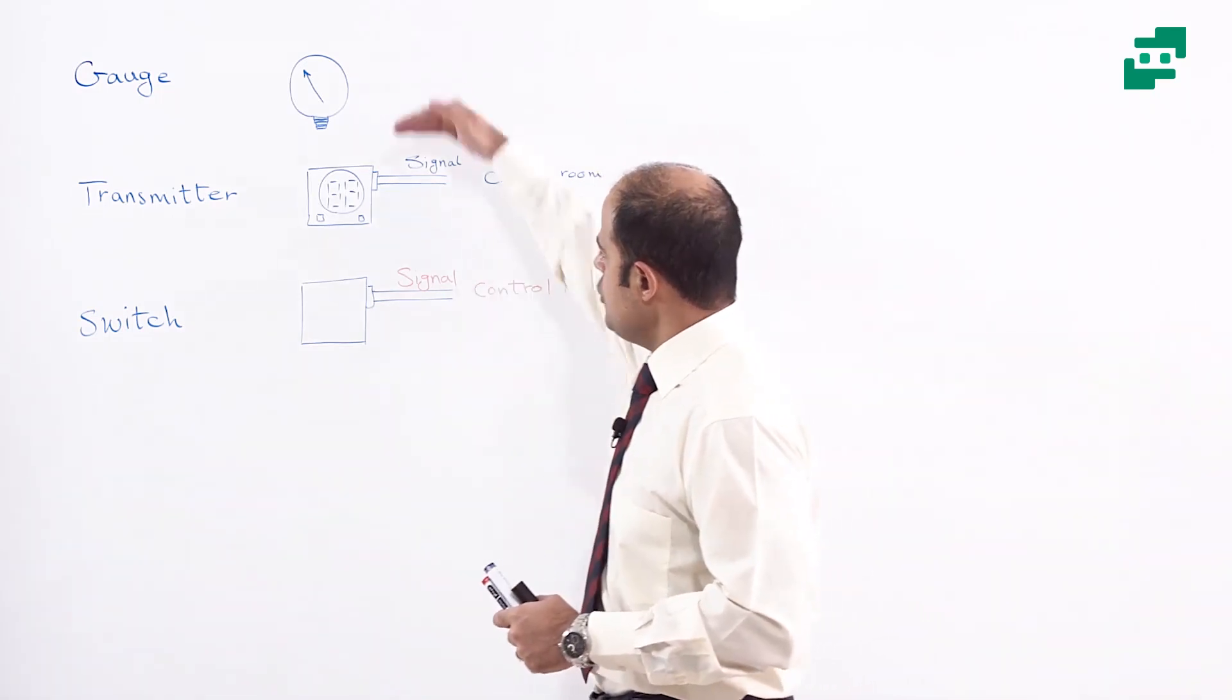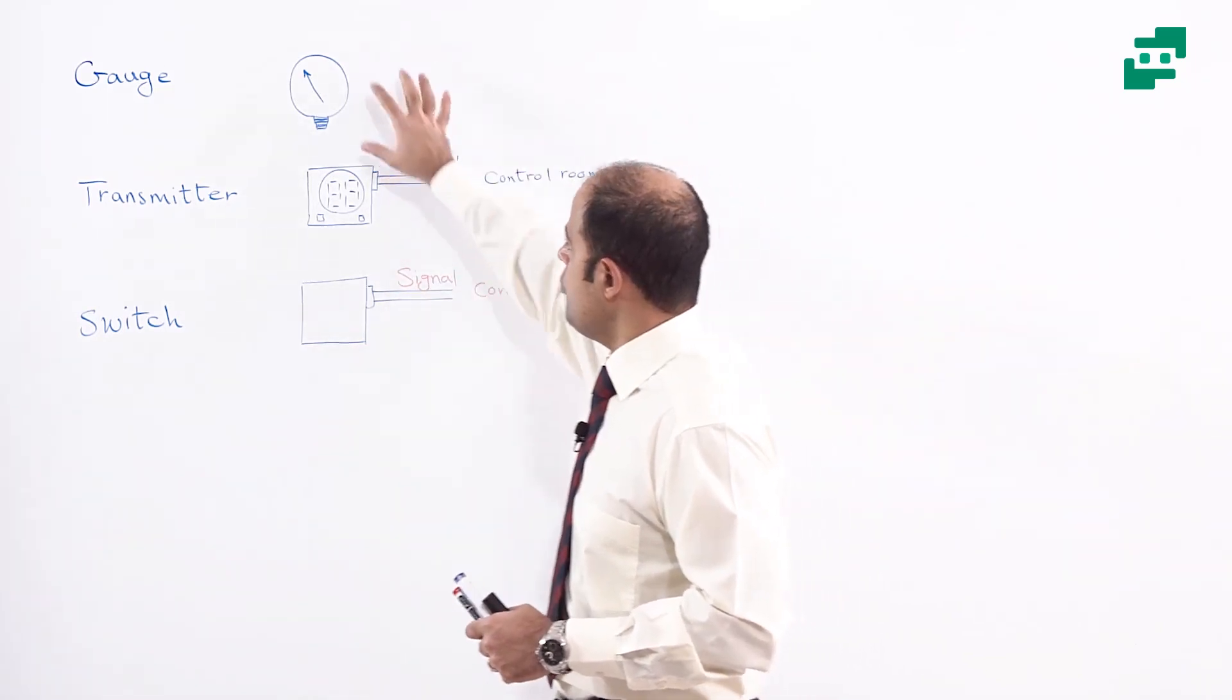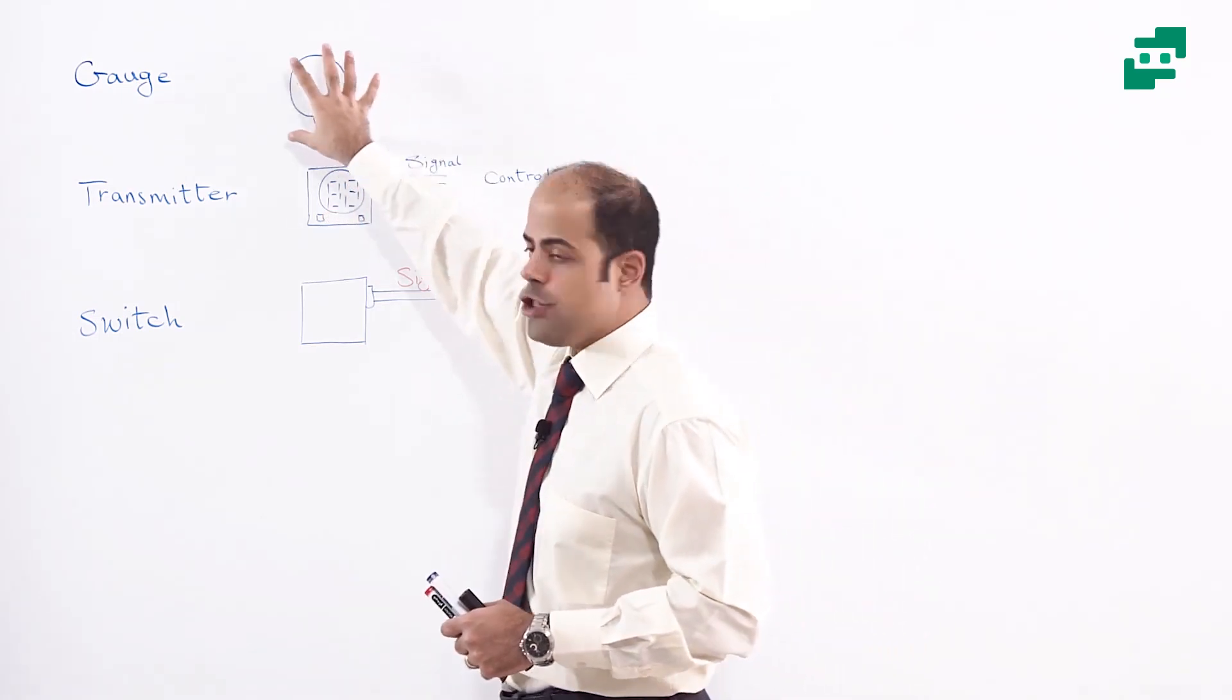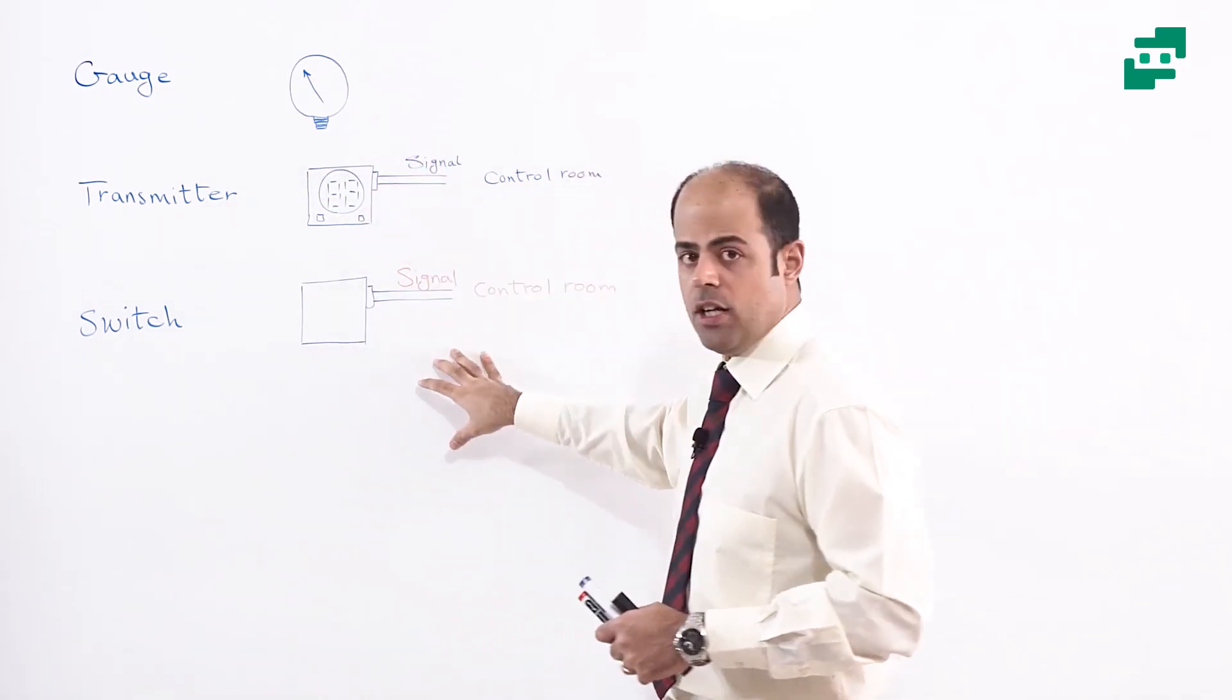So back to the things and compare all these three items with each other. You can find that gauge doesn't have any signal as I told you before because it is just measured mechanically. But these two things have some signals.